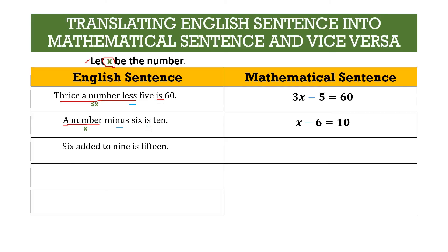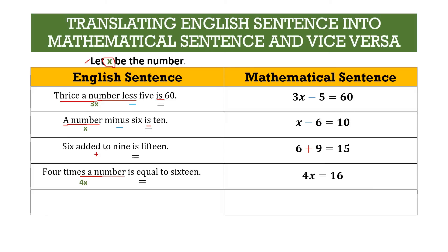For example 3, "6 added to 9 is 15" — we add 6 and 9 to get 15: 6 + 9 = 15. For example 4, "4 times a number is equal to 16" — we don't know the number so we write 4x, and "is" means equals, giving 4x = 16. For example 5, "the quotient of 64 and 8 is 8" — quotient means division, and "is" is the equals sign, so 64 ÷ 8 = 8.